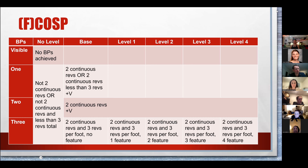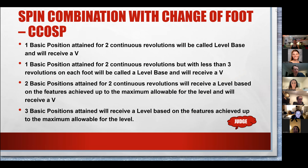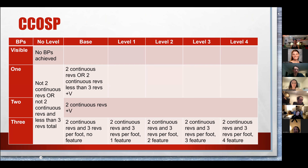For the spin combination with change of foot, similar rules apply. One basic position for two continuous revolutions gives a base with a V. Two basic positions can achieve up to the maximum allowable level with a V. All three basic positions feature the level with no V applied. A breakdown table shows these combinations, similar to the one for the combination spin without a change of foot.